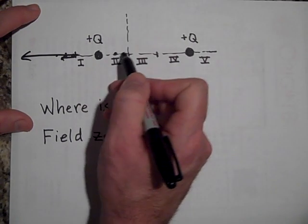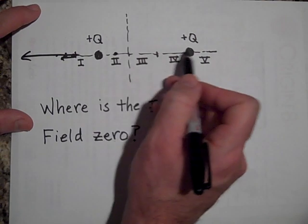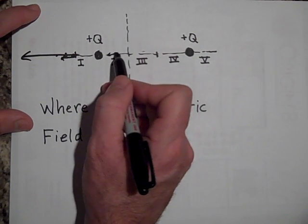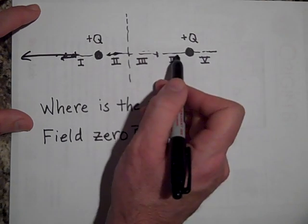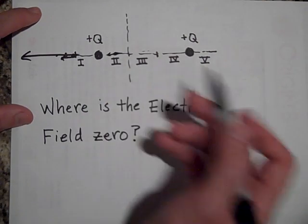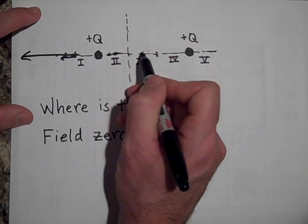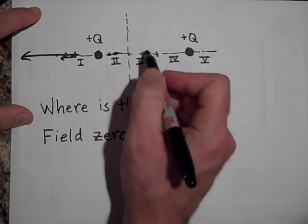If I put it in region two, it's going to be being repelled a lot by this force and a little by this force. And so this is going to be a huge vector this way, and this would be a little vector over here. And so those aren't going to be equal. There will be a spot though, dead center, if these are equal charges,